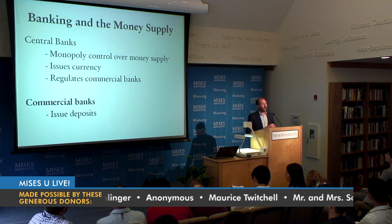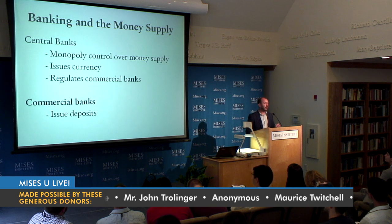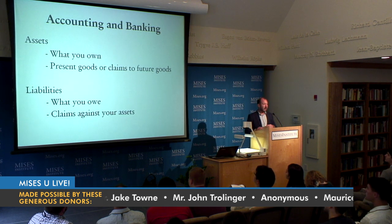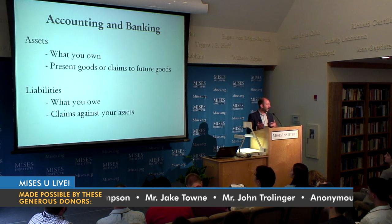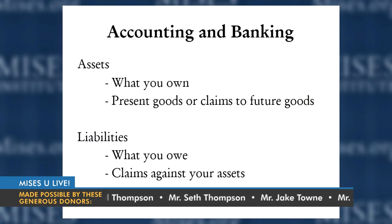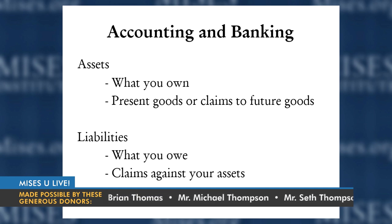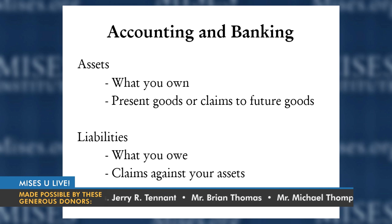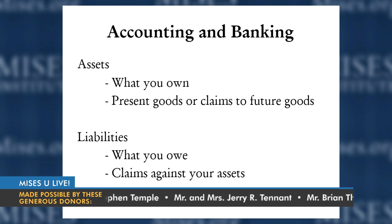To understand how these two institutions control the money supply, it's helpful to take an accounting point of view. In accounting, everything gets divided into either an asset or a liability. An asset is something you own; a liability is something you owe. Assets can be present goods or claims to future goods. Liabilities are claims against your assets. The fundamental equation of accounting is that assets always have to equal liabilities. These two components necessarily have to be equal to one another.